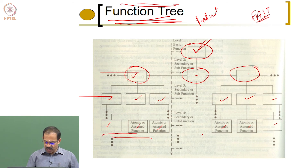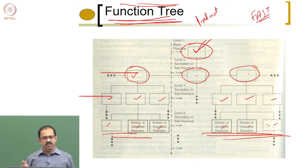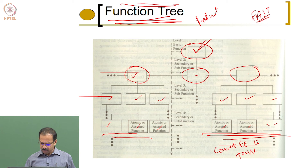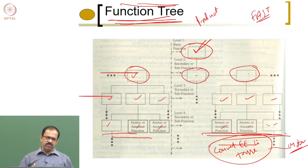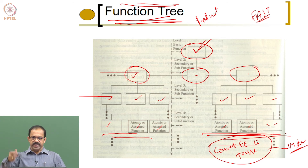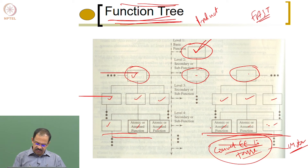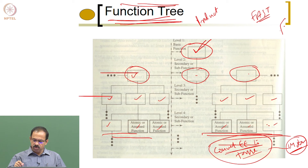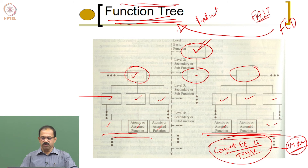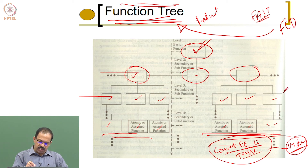At the lowest level you see all the small sub-functions which need not be decomposed further, or for which you can identify a part that provides that function. For example, convert electricity to torque — we know a motor does this, so we stop decomposing there. Whenever we reach that level, we do not decompose further. The purpose of functional decomposition is to create a function tree identifying all sub-functions needed to achieve the top-level function.